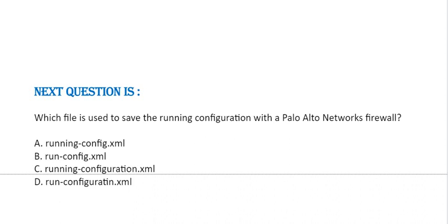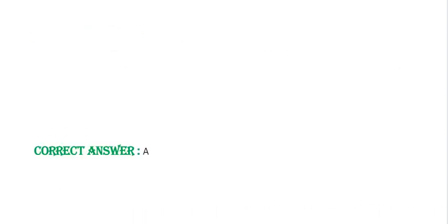Next question: Which file is used to save the running configuration on a Palo Alto Networks firewall? Option A: running-config.xml. Option B: run-config.xml. Option C: running-configuration.xml. Option D: run-configuration.xml. Correct answer is Option A.